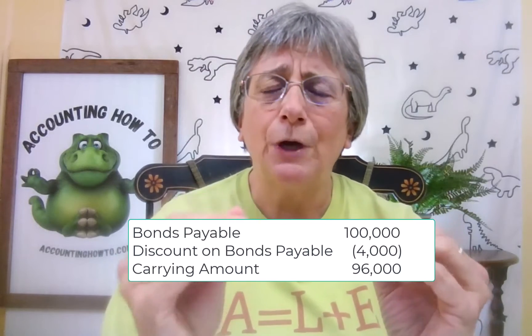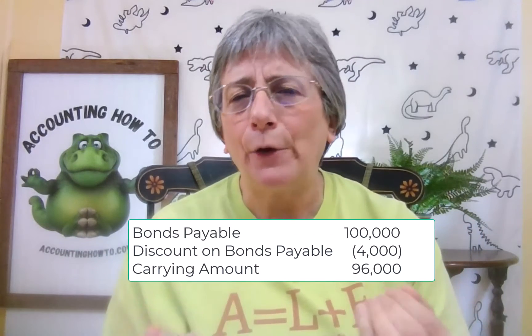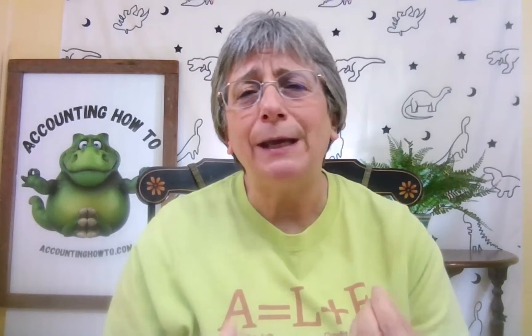On the balance sheet, that's going to show up under long-term liabilities. We'll have bonds payable for $100,000 — the full amount — and then we're going to subtract from that the discount on bonds payable. So the value we are carrying on our books is $96,000. Think about it this way: how much cash did we get? We got $96,000 because we gave them a discount on that bond. The value of our liability is equal to the cash that we got, but we're also recognizing that at the end of this we're going to be giving them the full $100,000 — and we're using that discount on bonds payable to keep track of that.